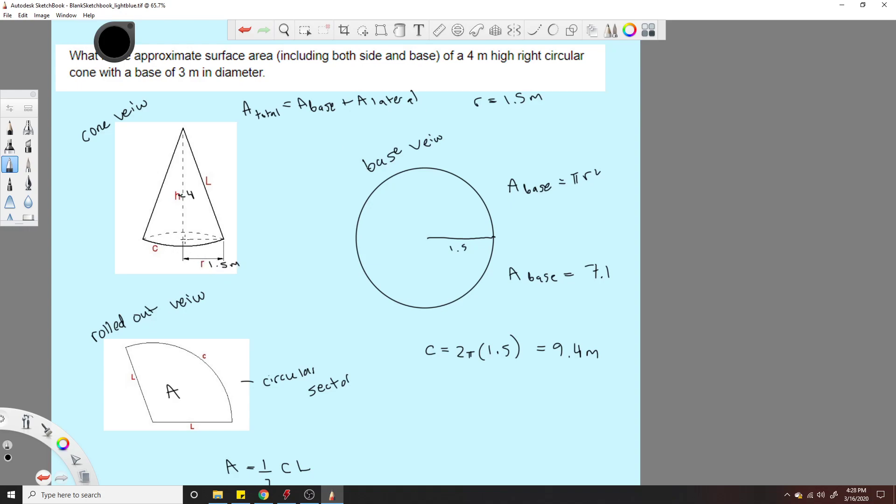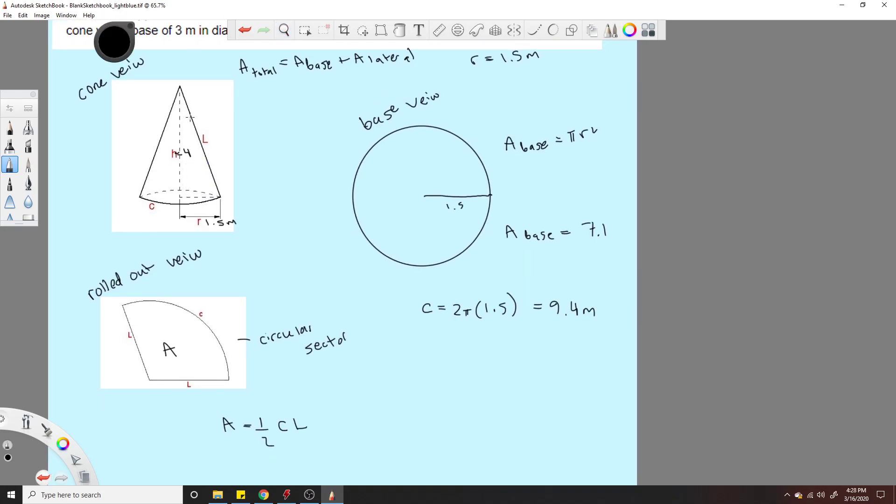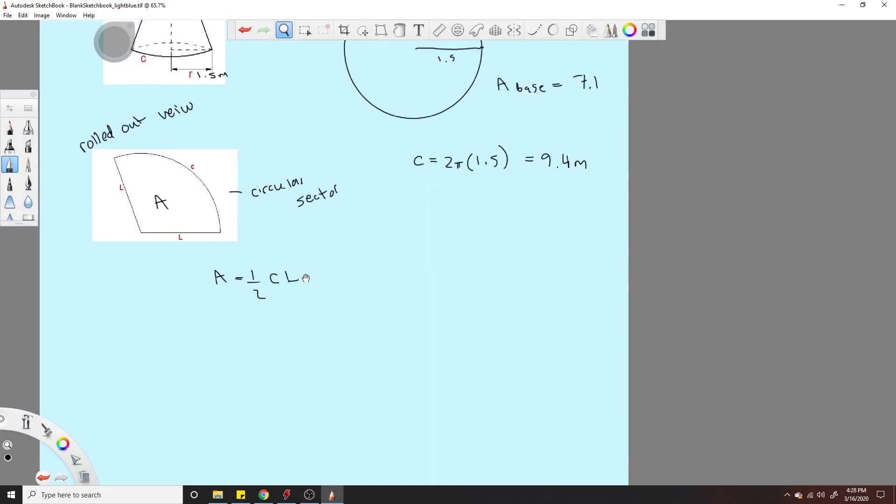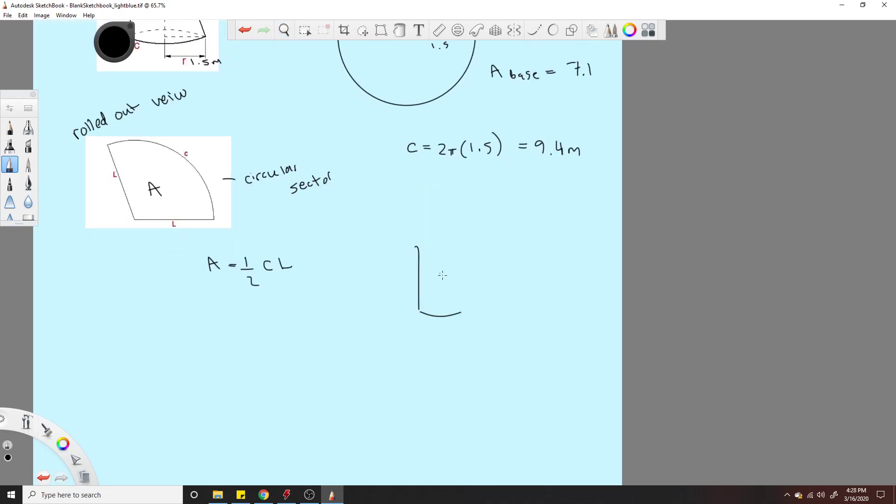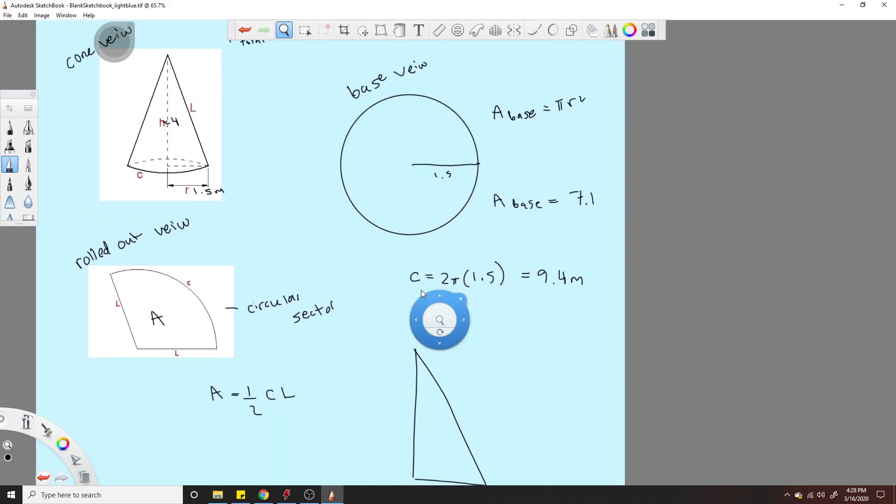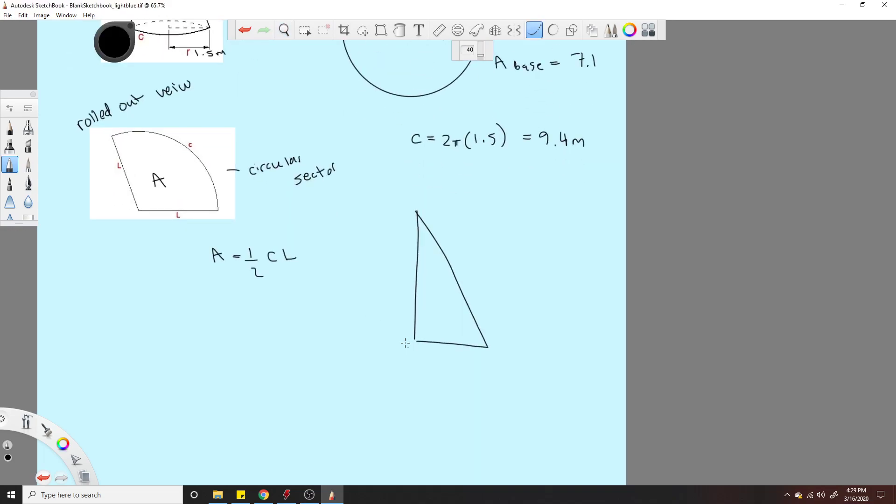And we know the C, but that's not important for this problem. So with these two variables here, we can use right triangle trig. Get this on. Good enough. So here's our right triangle view from the side. We have 1.5 and we have 4 meters high. And we want to know this value L here.